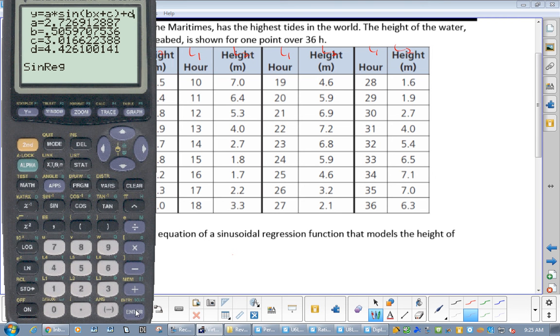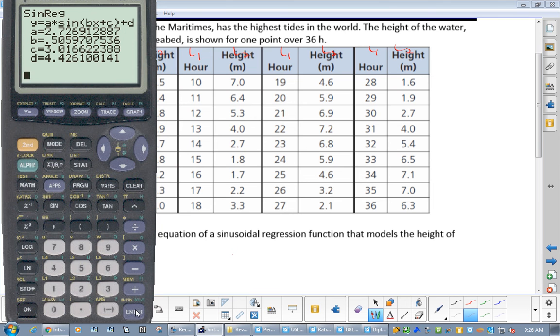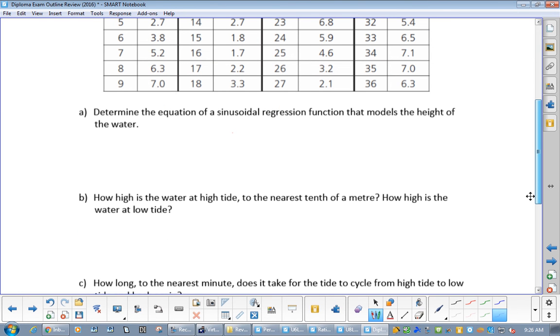And there's a lot of data, so it takes a bit. There it is. Okay, so it tells you what A, B, C, and D are. So let's write that down. So it is Y equals 2.73 sine 0.506X plus 3.02 plus 4.4261.